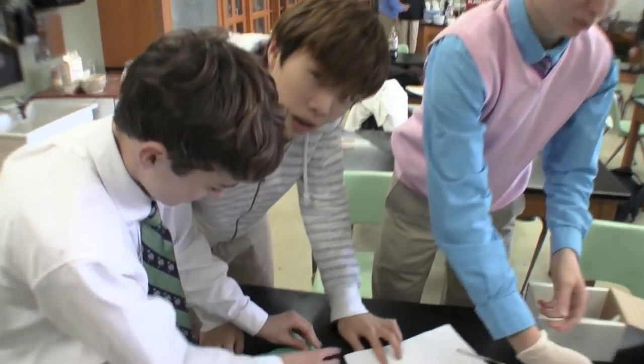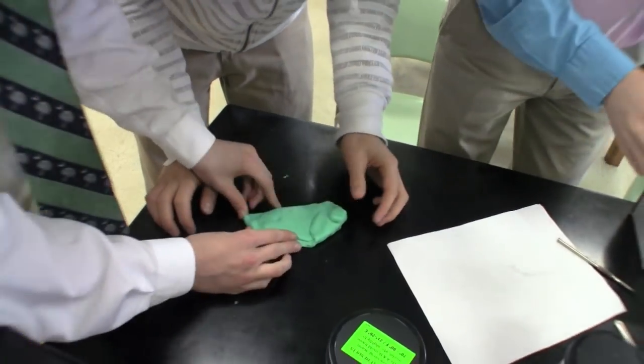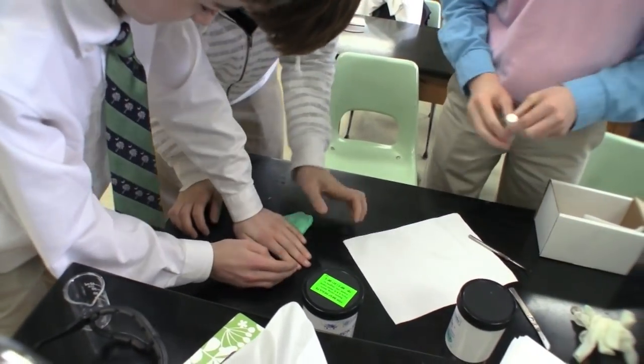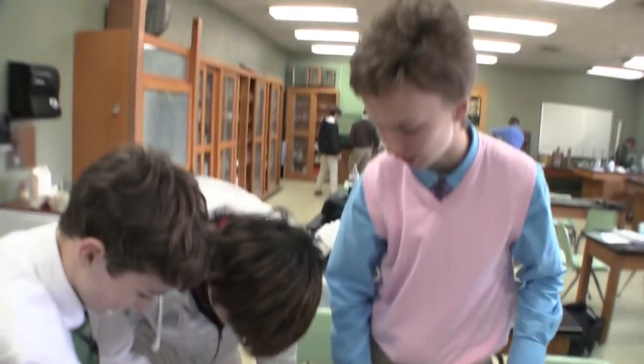What are you guys doing? We are making a mold for our melting spoon. We're using, for the metal, we're using indium, which is this right here, plus tin and bismuth.